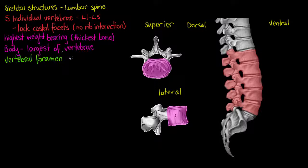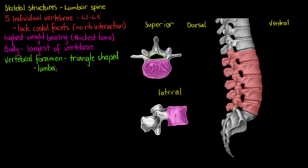The next feature we're going to see is the vertebral foramen. The vertebral foramen in our lumbar spine is somewhat triangular in shape, and that is because of the concave shape of our lumbar spine. Now if we remember, we go concave, convex, and then concave again.